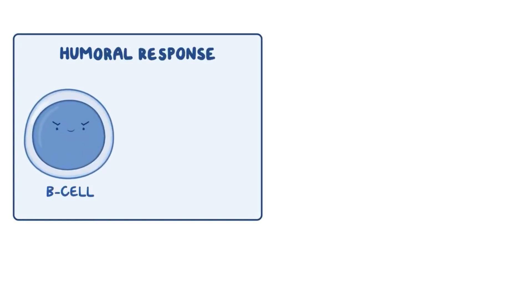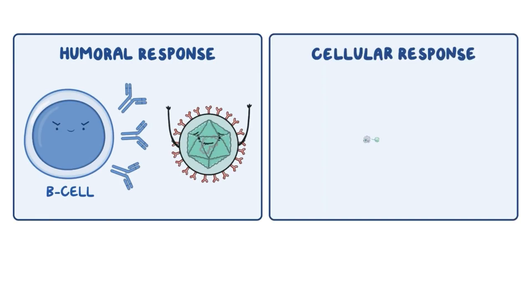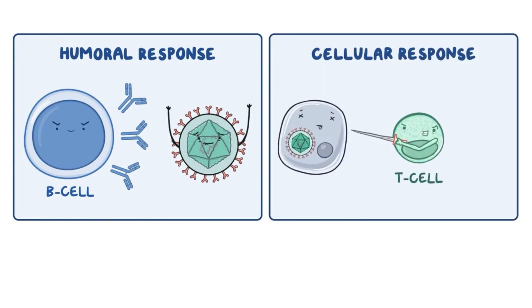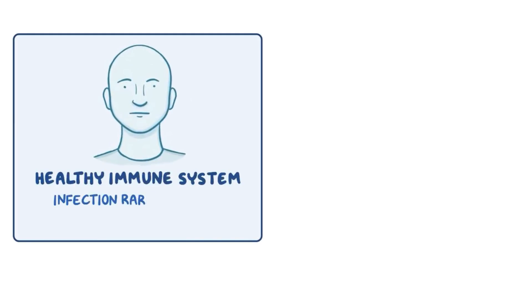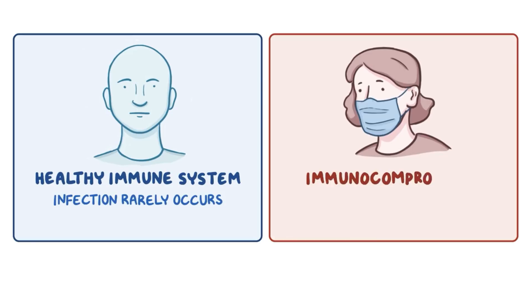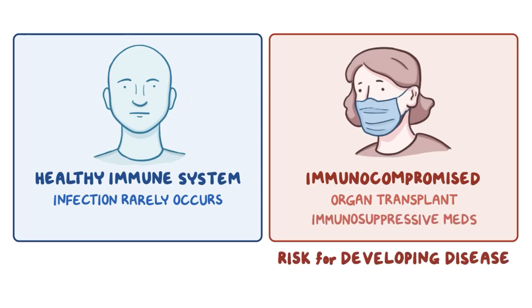The body's immune system reacts to the infection by mounting a humoral response, where B cells create antibodies to fight off the virus, and a cellular response, in which cytotoxic T cells work to kill the infected cells, limiting their ability to spread to other tissues. So in people with a healthy immune system, infection rarely occurs. However, people who are immunocompromised, such as people with AIDS, people who have undergone an organ transplant, or people who take immunosuppressive medications, are at risk for developing the disease.